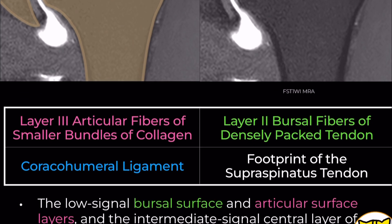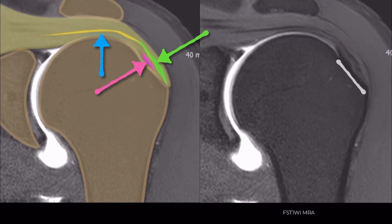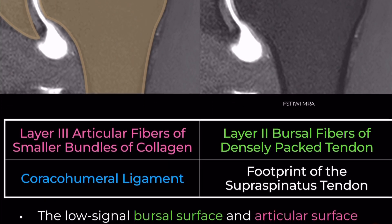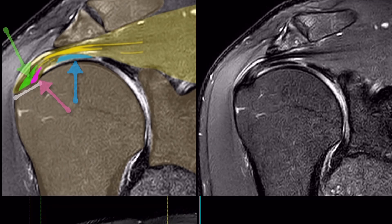Layer 3 — Deep Fibers: This is a thinner layer, approximately 3 mm, with fibers crossing at 45-degree angles and lacking uniform orientation. This layer also demonstrates low signal intensity, which can sometimes mimic the appearance of calcification in calcific tendonitis.